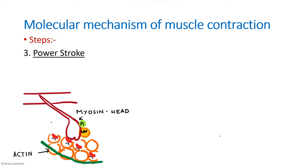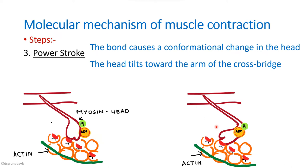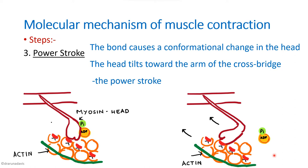The third step is the power stroke. Once the complex is formed between actin and myosin, there is a conformational change in the head — the head tilts towards the arm. This tilting causes movement of the actin as well, and that is called the power stroke. During this power stroke, phosphate is released, and after the movement, ADP is also released.